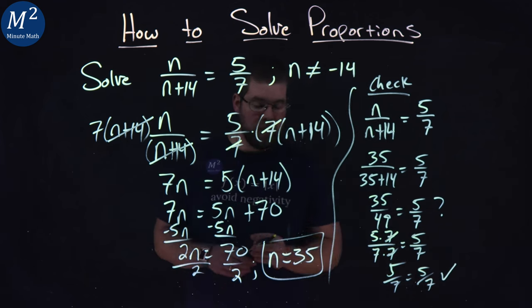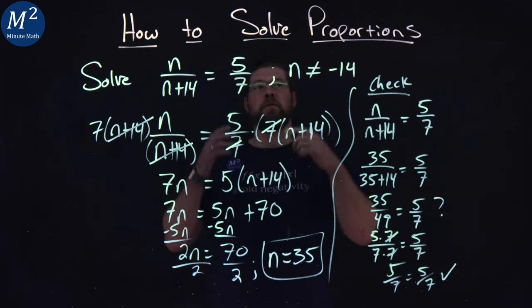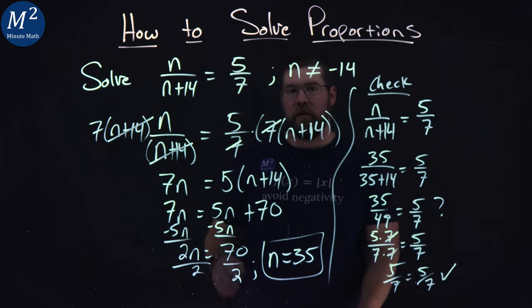And so, yes, the left and right hand side are equal, confirming that a solution to our proportion here is n equals 35.